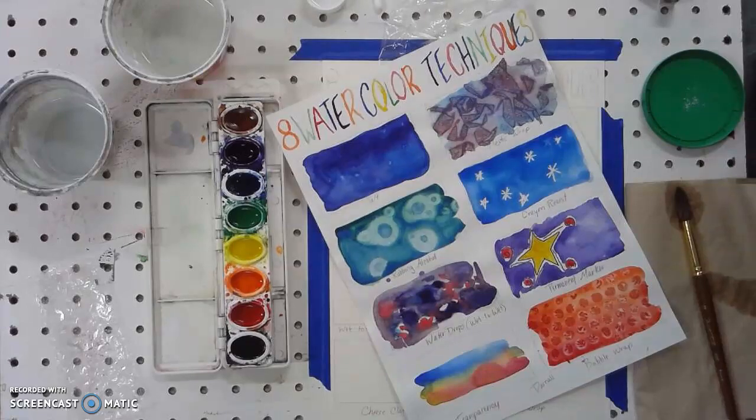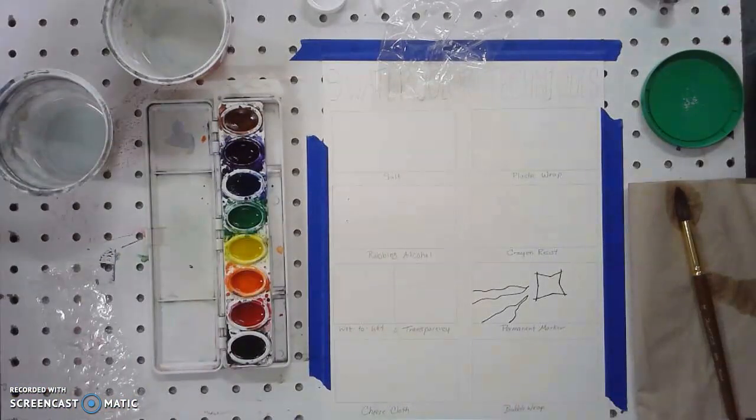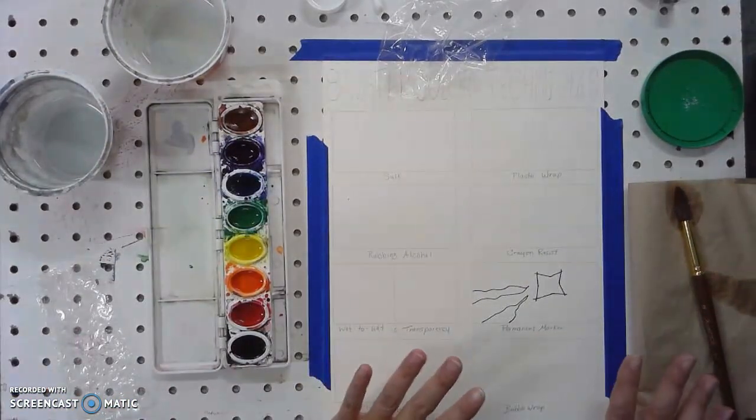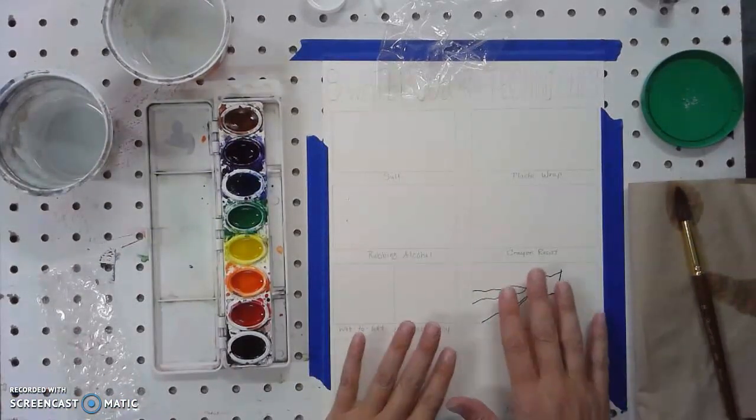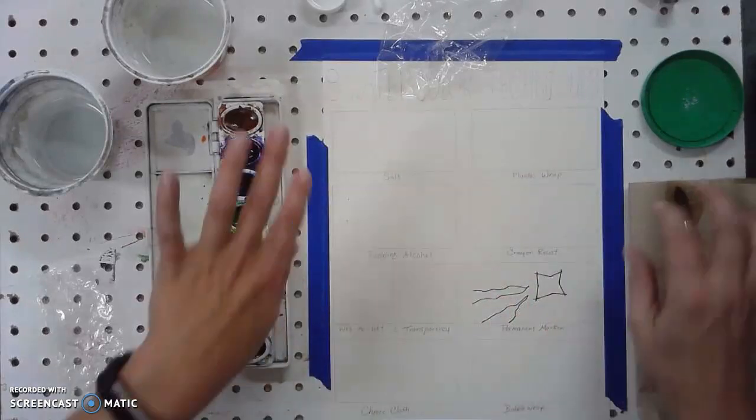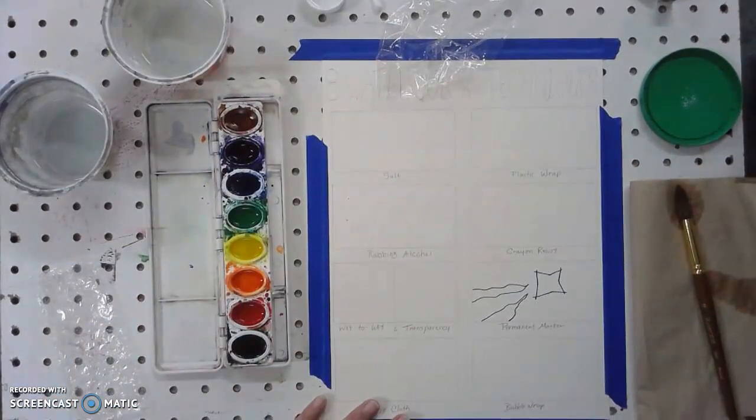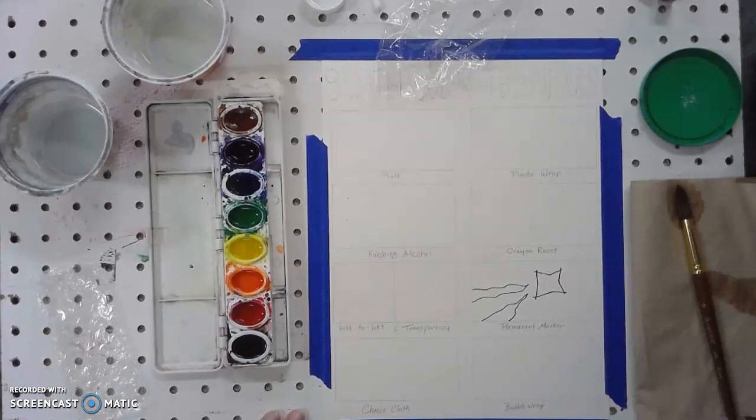All right, eight watercolor techniques that we're going to do today. I have all my supplies out ready to go. I transferred my different technique things onto watercolor paper and then I took some blue painter's tape and taped it down to a board so it doesn't warp on me.